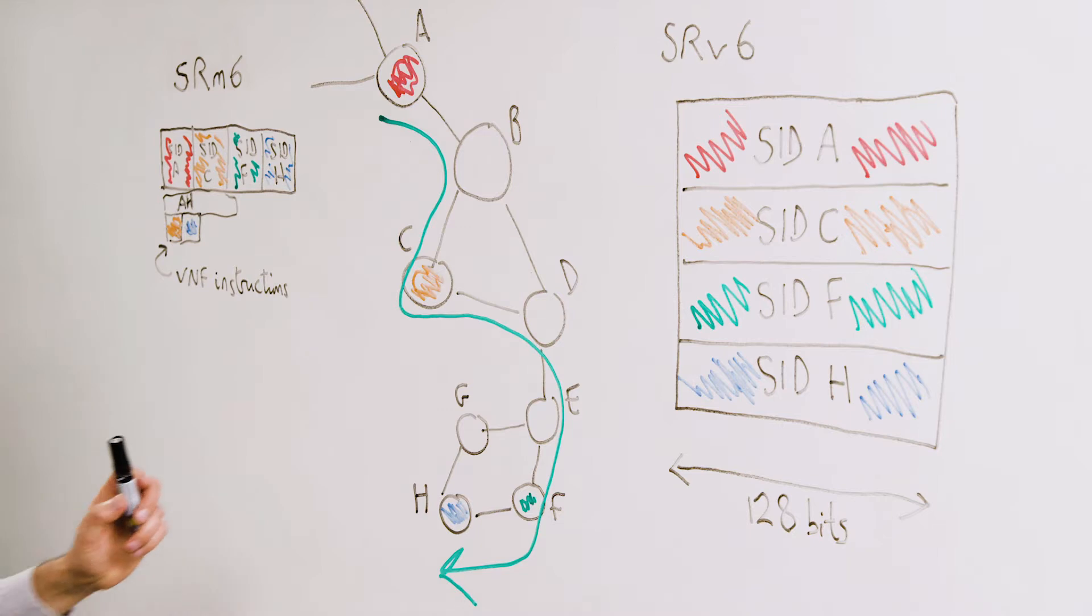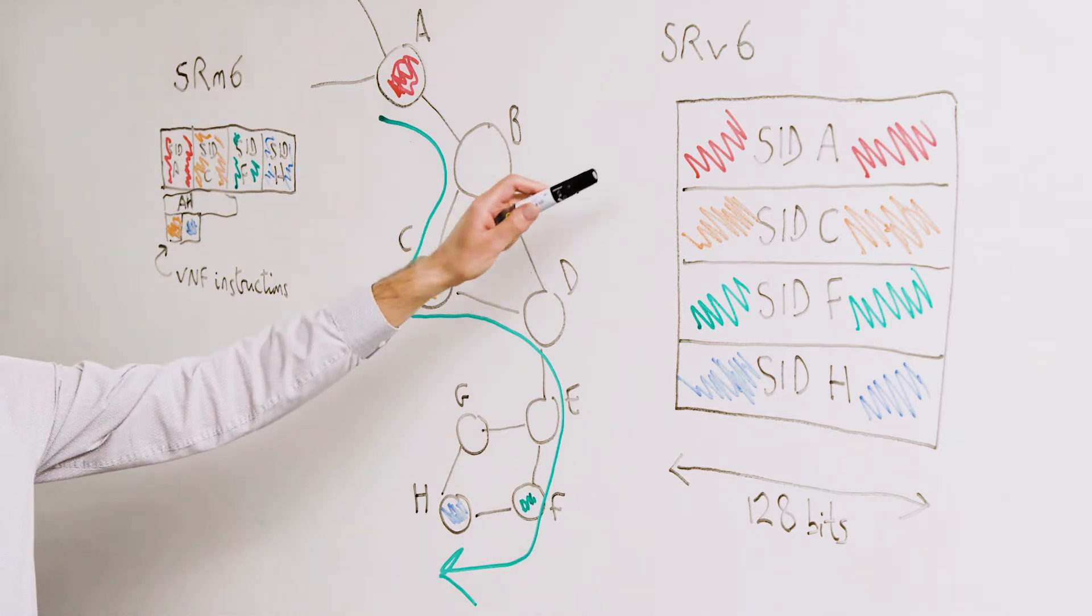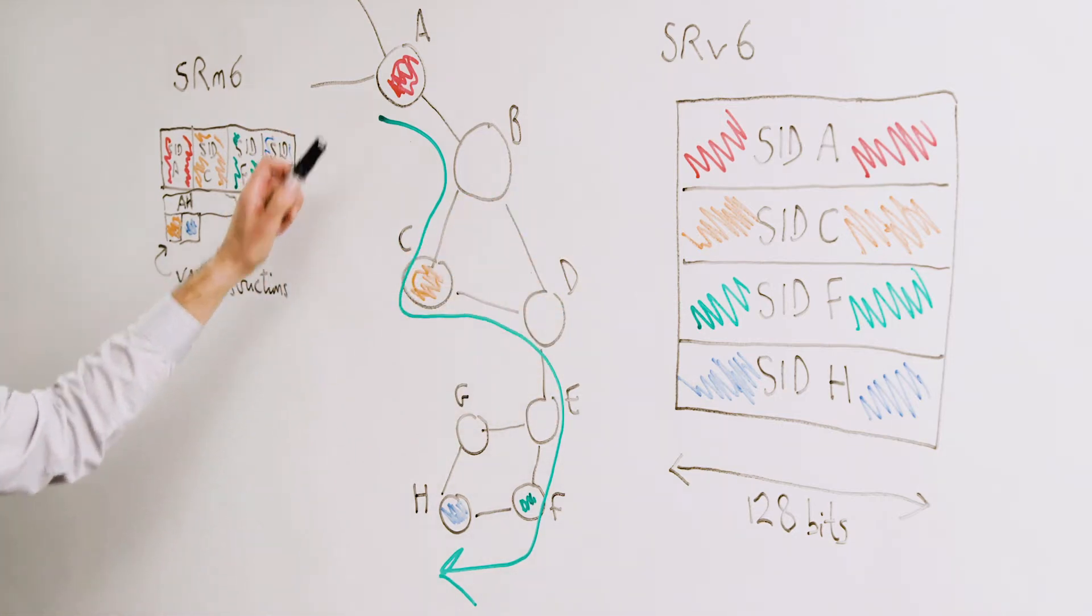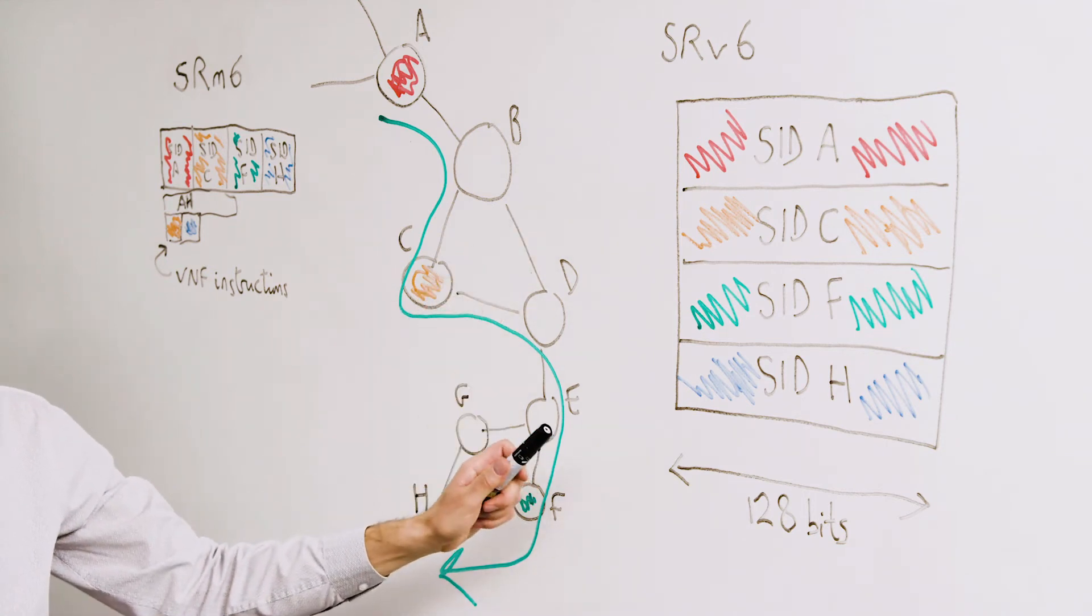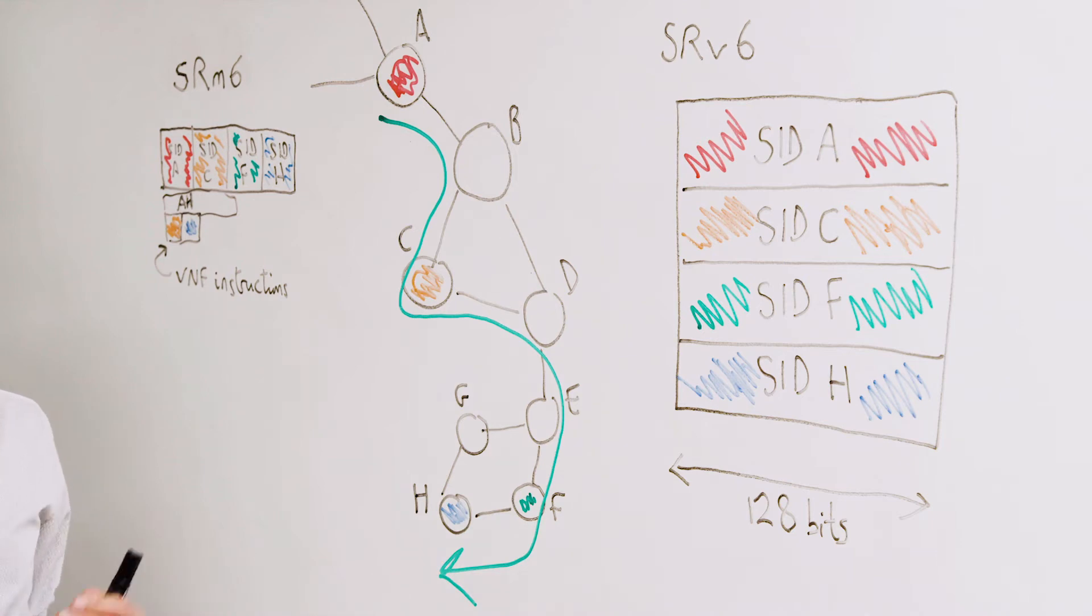Now what happens with SRV6 is that you have a SID associated with each of these SRV6 nodes, and each of those SIDs is actually 128 bits wide. It's in the form of an IP version 6 address.